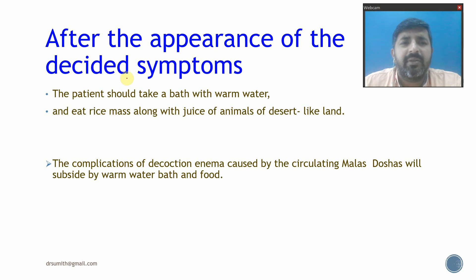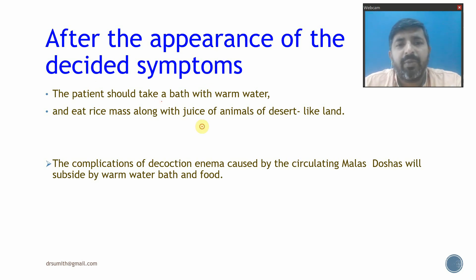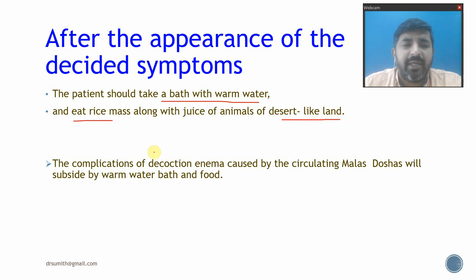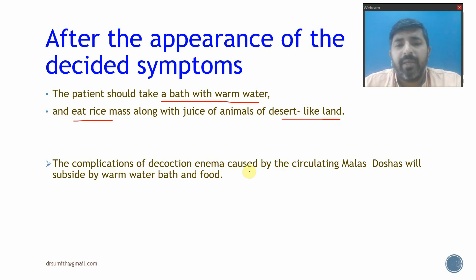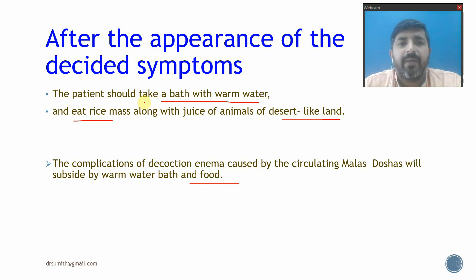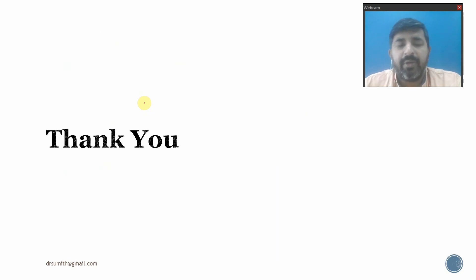After the Sammik Basti Lakshana appear, the patient should take a bath with warm water and eat rice with juices of animals from arid/jungle regions. Complications from the decoction enema caused by circulating Malas and Doshas will be subsided by warm water bath and this food. With this the topic concludes — please review the videos and PPT, and bring any queries to the interactive session. Thank you.